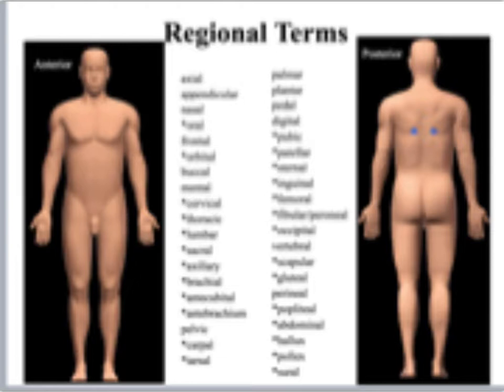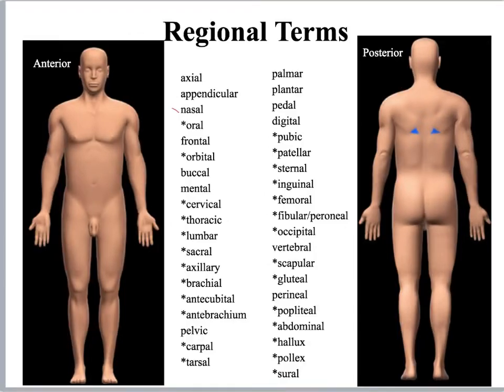This slide has two pictures, and on your own I want you to take a pen or pencil and find these structures. For example, nasal goes to nose, oral goes to mouth, frontal goes to forehead — go through and do all of that on your own.